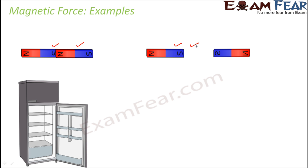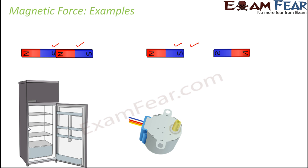Think of the door of your refrigerator. Have you ever observed that the door has a magnet attached to it? That is why when you try to close the door of the refrigerator, as you bring the door quite near, it gets closed on its own due to attraction from magnetic force. Similarly, when you want to open the door, you need to apply a good amount of force to overcome that attractive magnetic force. Electric motors and electric generators are also examples where we find applications of magnetic force.